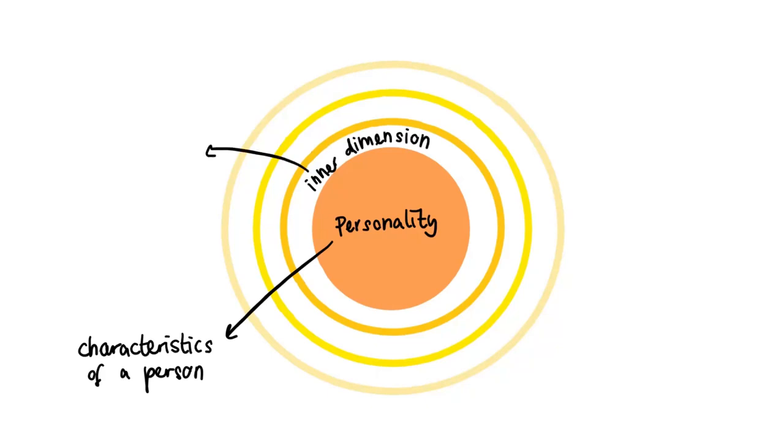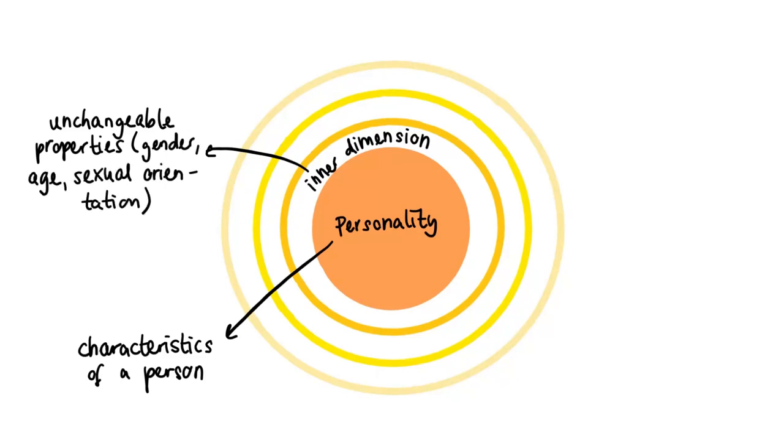It's encircled by the inner dimension layer, which includes relatively unchangeable properties, e.g. gender, age and sexual orientation. These are also mentioned in the principles of equality.